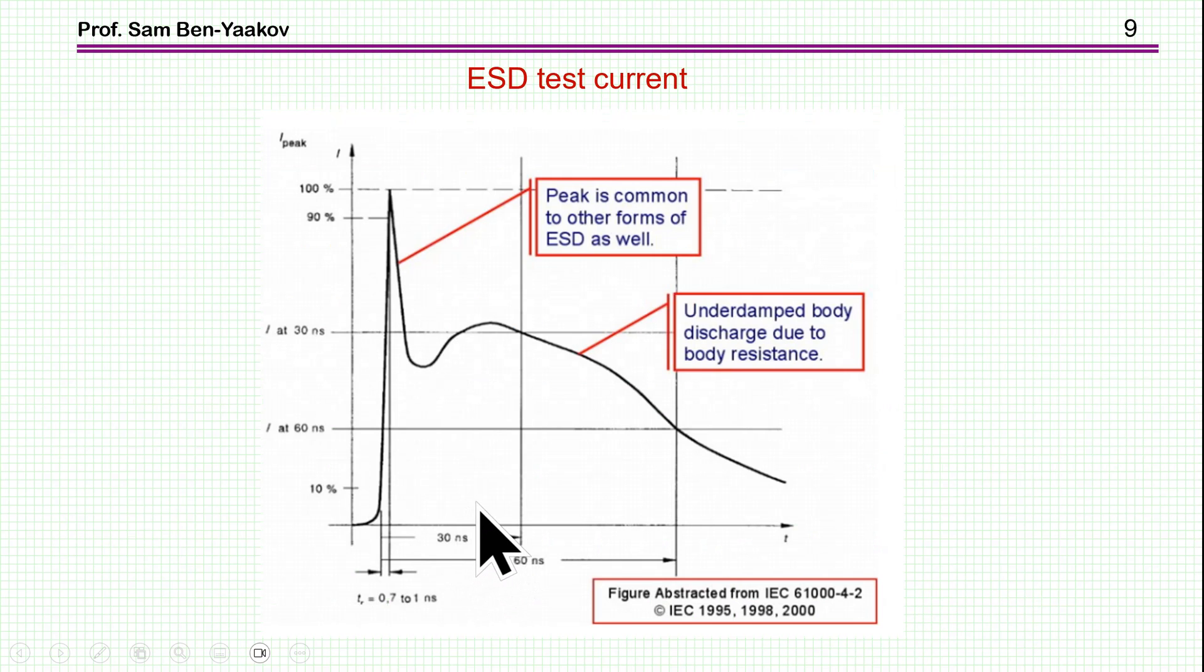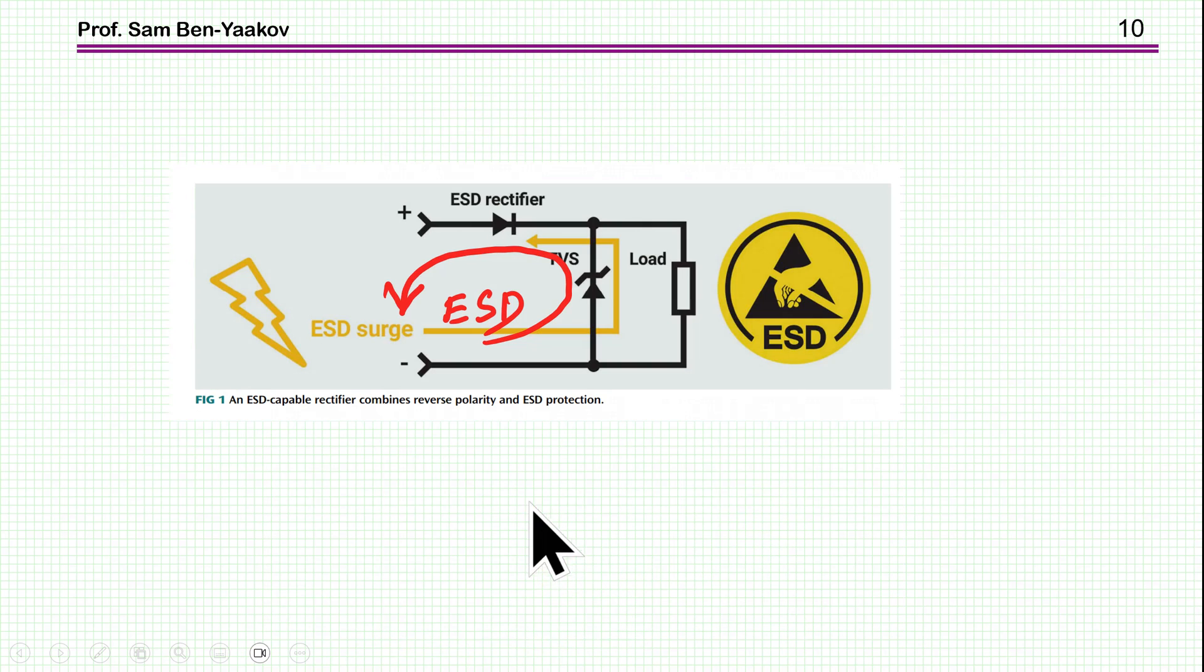And here is the waveform from the standard. This is the formal waveform. And here we are talking about the current. So the current is going up to 100% at a very short time. It's a very fast rise time. And there is some sort of an oscillation. And the total here, up to this point, is 60 nanoseconds. And as I've said, we're talking about a 100 nanosecond pulse altogether from start to just about end.